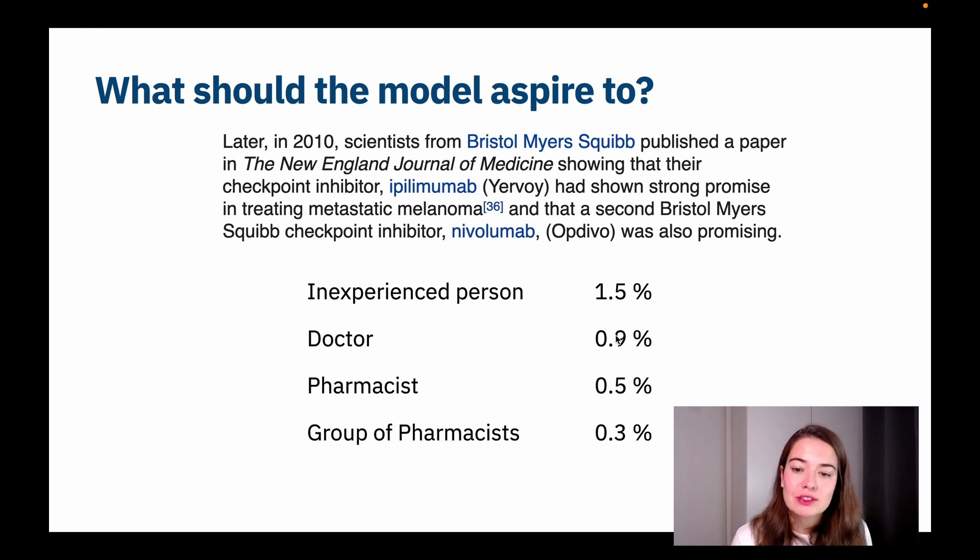And a doctor got 0.9% mistakes. A pharmacist was able to get only 0.5% mistakes. And a group of pharmacists, so if we put let's say three, five pharmacists together and then they look at this example and discuss and tell us what the drug names are or where they are, then it will be 0.3% mistakes.